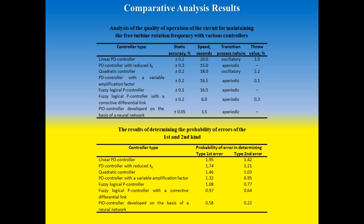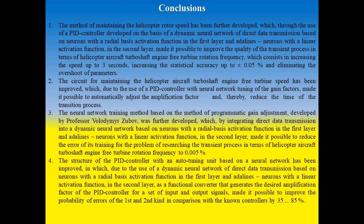A comparative analysis of the accuracy provided by each of the considered controllers is given in second table, which shows the probabilities of the errors of the first and second kind in determining the optimal free turbine frequency rotation parameter. The conclusions are presented in this slide. Thank you for your attention.